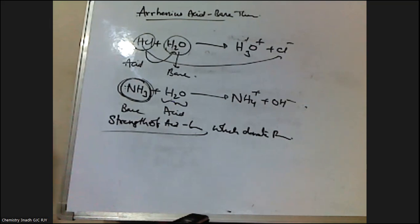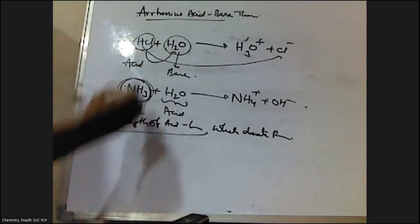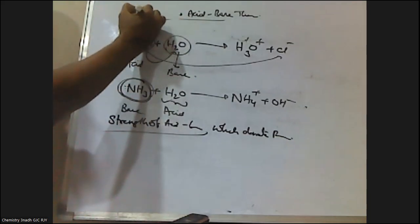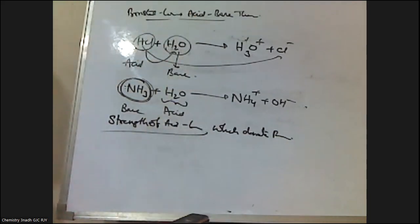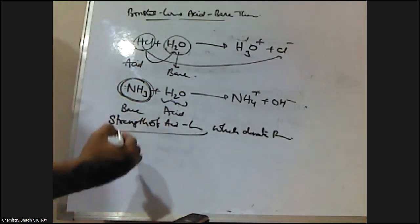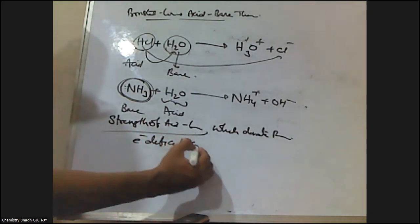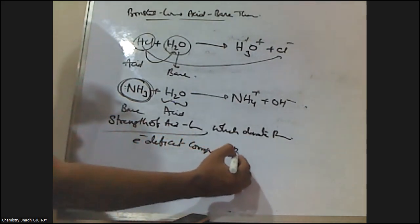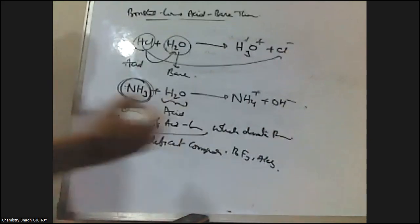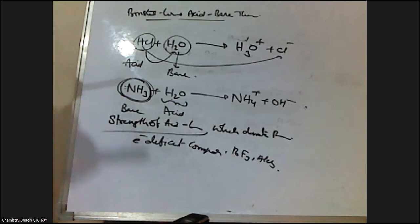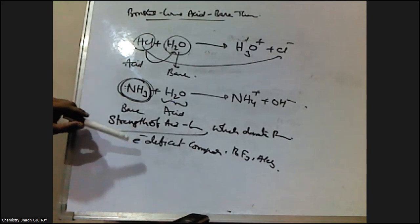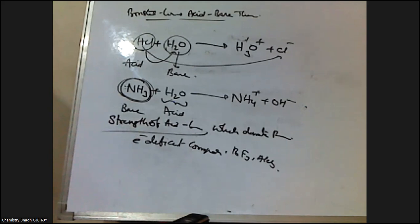One of the limitations of the Bronsted-Lowry Theory is that it failed to explain the acidic nature of electron-deficient compounds such as BF3 and AlCl3. This limitation, which was also present in the Arrhenius Acid Base Theory, cannot be explained by the Bronsted-Lowry Theory either. Thank you for watching Kranath Chemistry Classes. Please like the video, share and subscribe the channel.